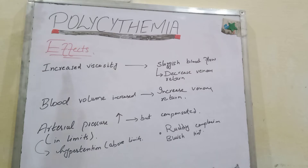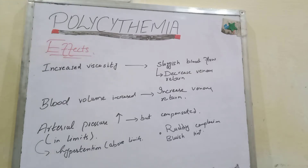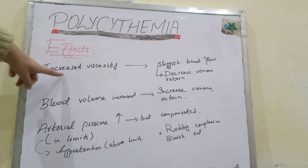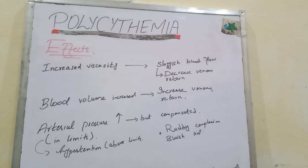Polycythemia means there is an increased number of RBCs. When there is an increased number of RBCs, the hematocrit percentage will be larger. And whenever there is a large amount of blood cells in our blood, the blood will be more viscous — blood viscosity will increase.